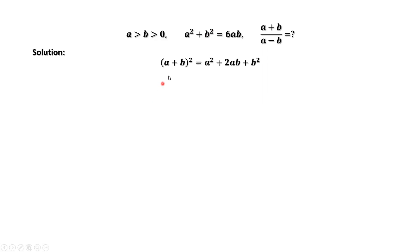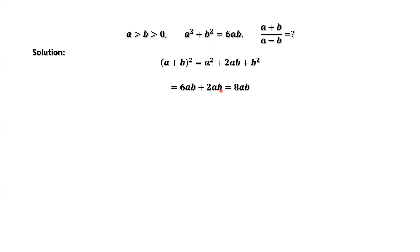We want to find A plus B first. A plus B squared equals A squared plus 2 times A times B plus B squared. Since A squared plus B squared equals 6 times A times B, therefore we have 6AB plus 2AB equals 8 times A times B.